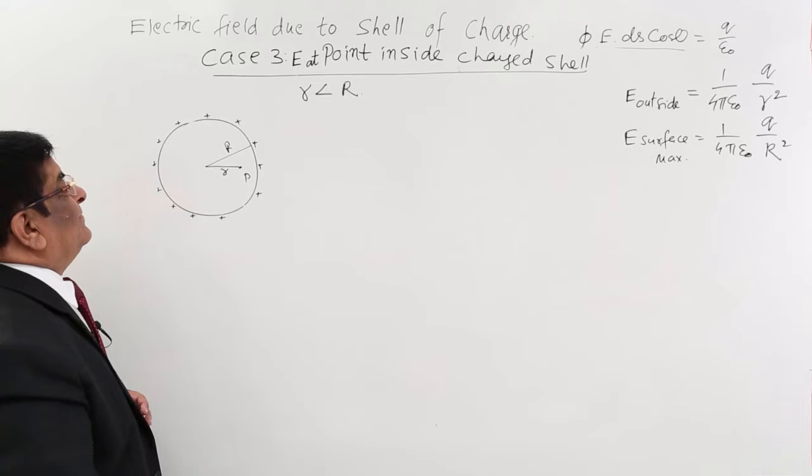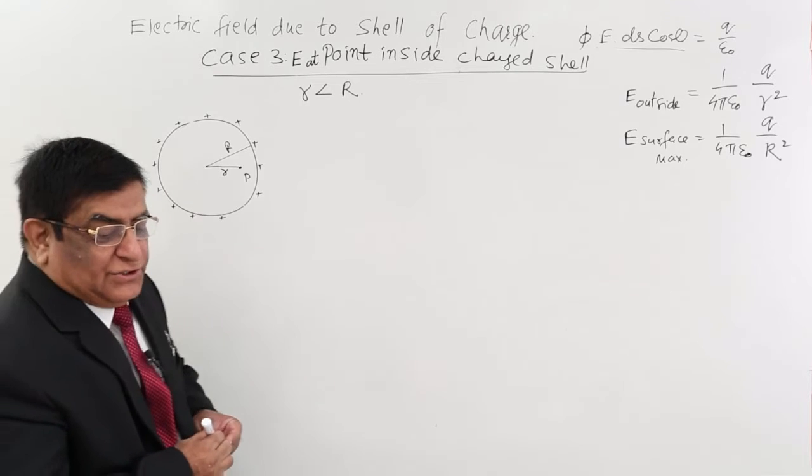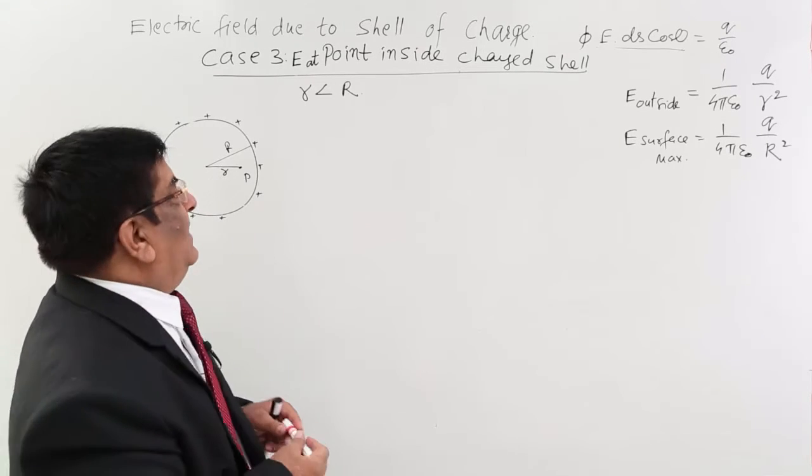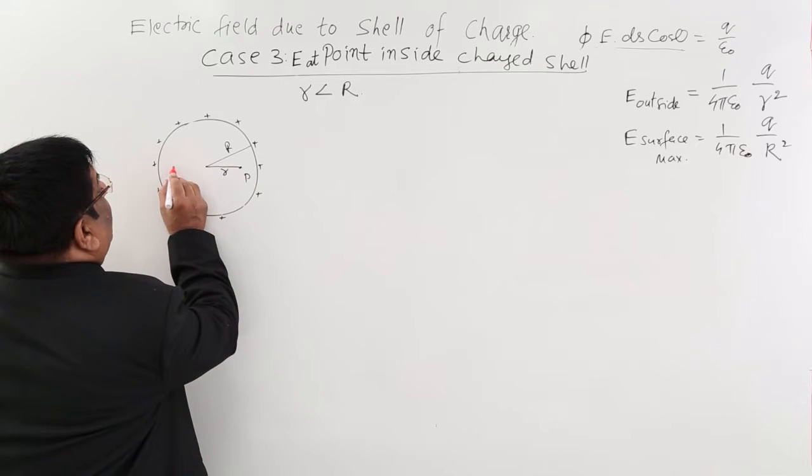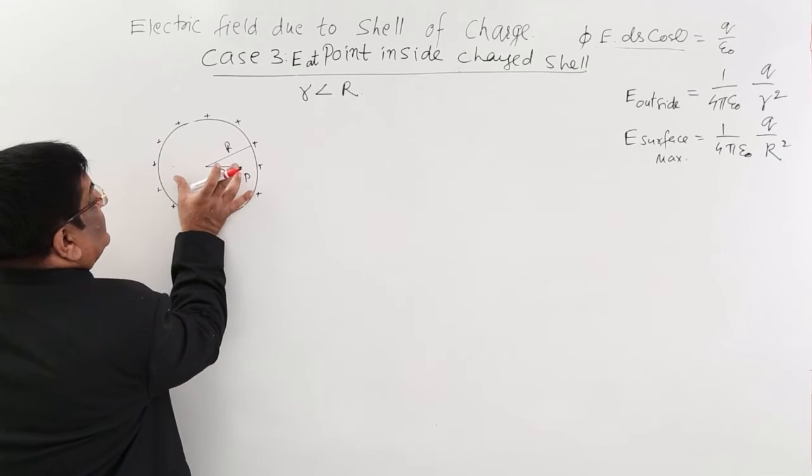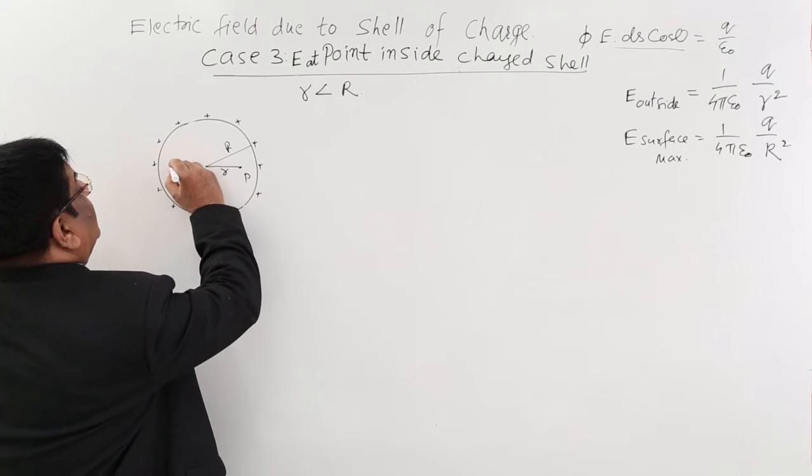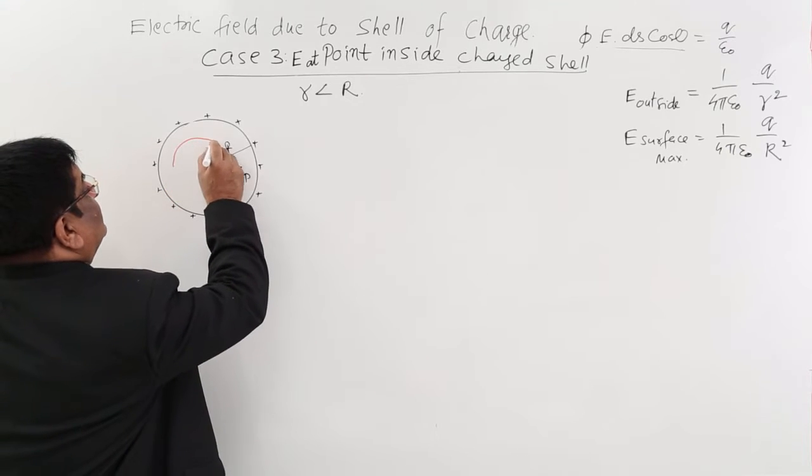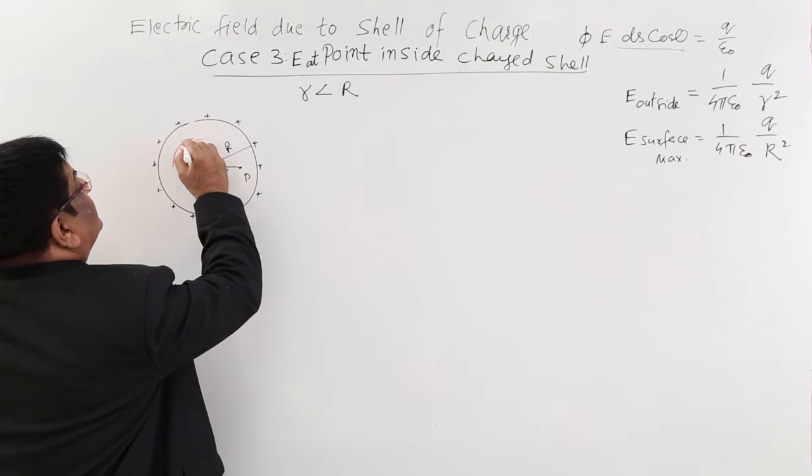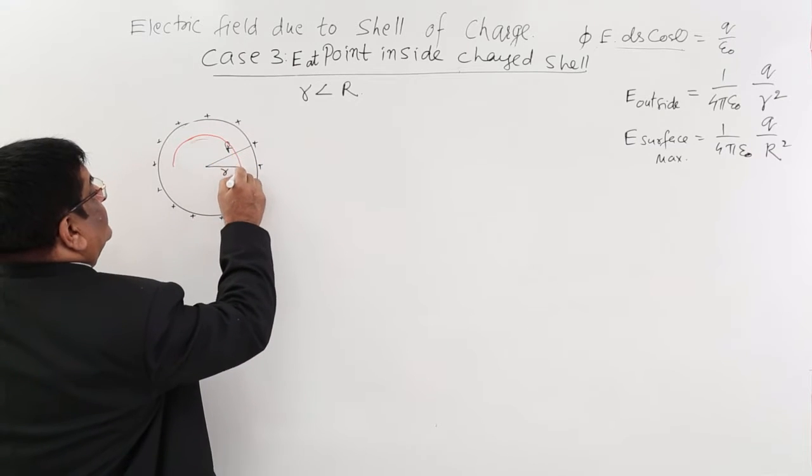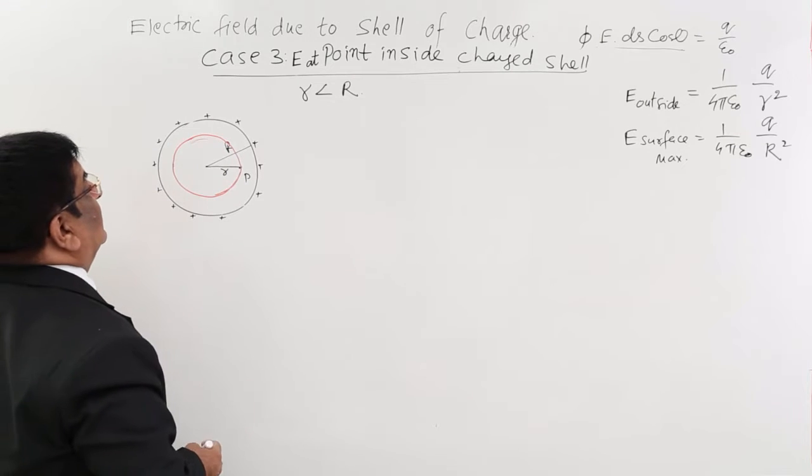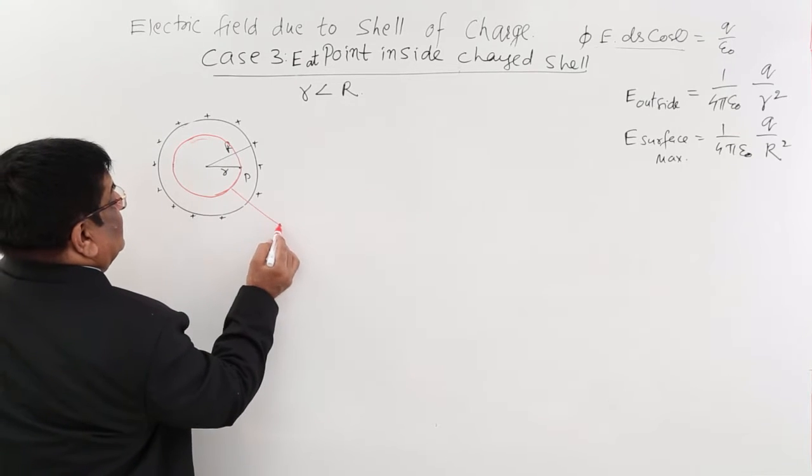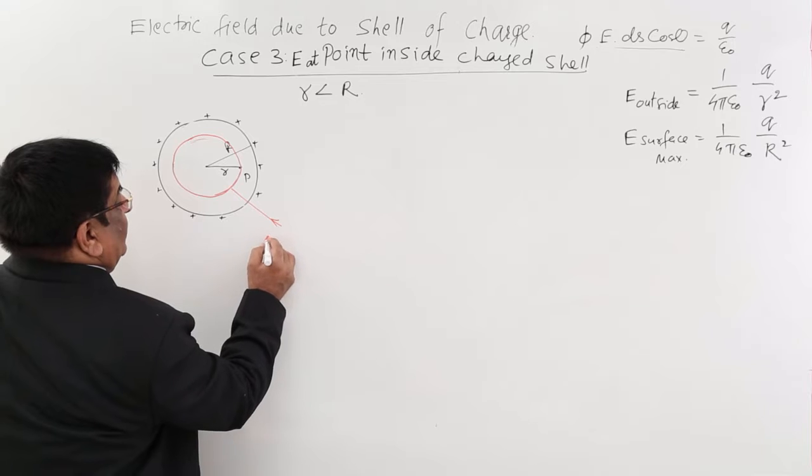Now we start our calculation exactly in the same manner. First, draw a Gaussian surface. So I draw a symmetrical surface taking r on both sides and draw a concentric sphere. This is a concentric sphere and this is our Gaussian surface.